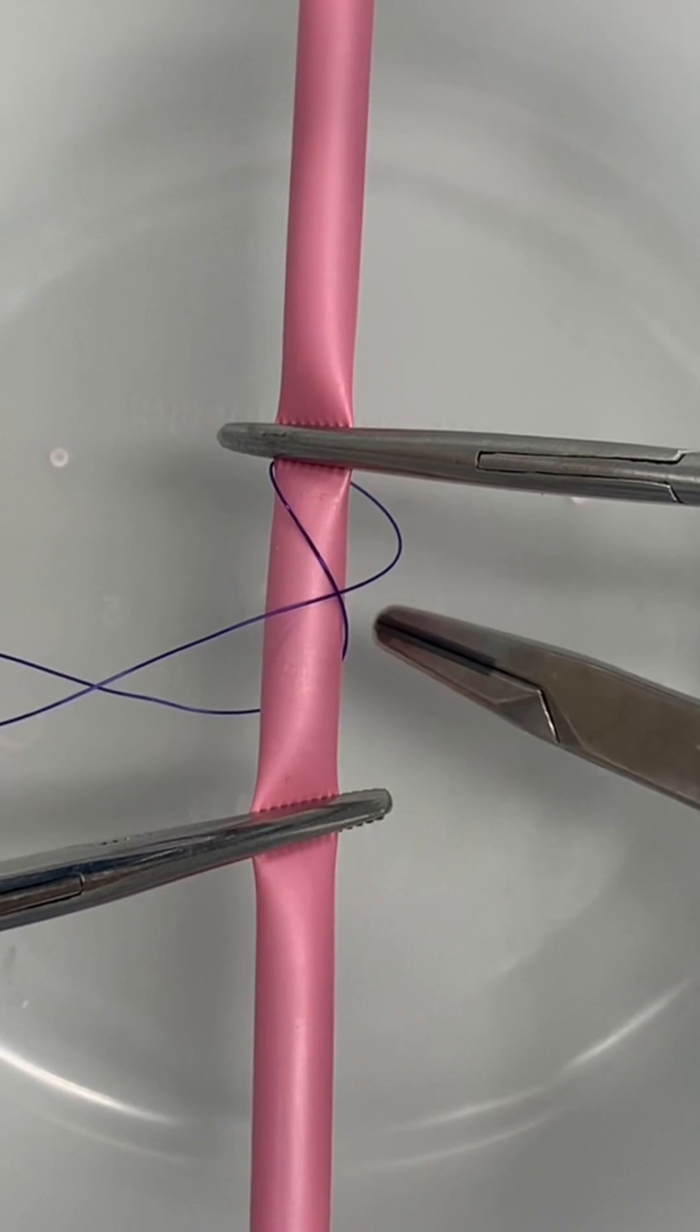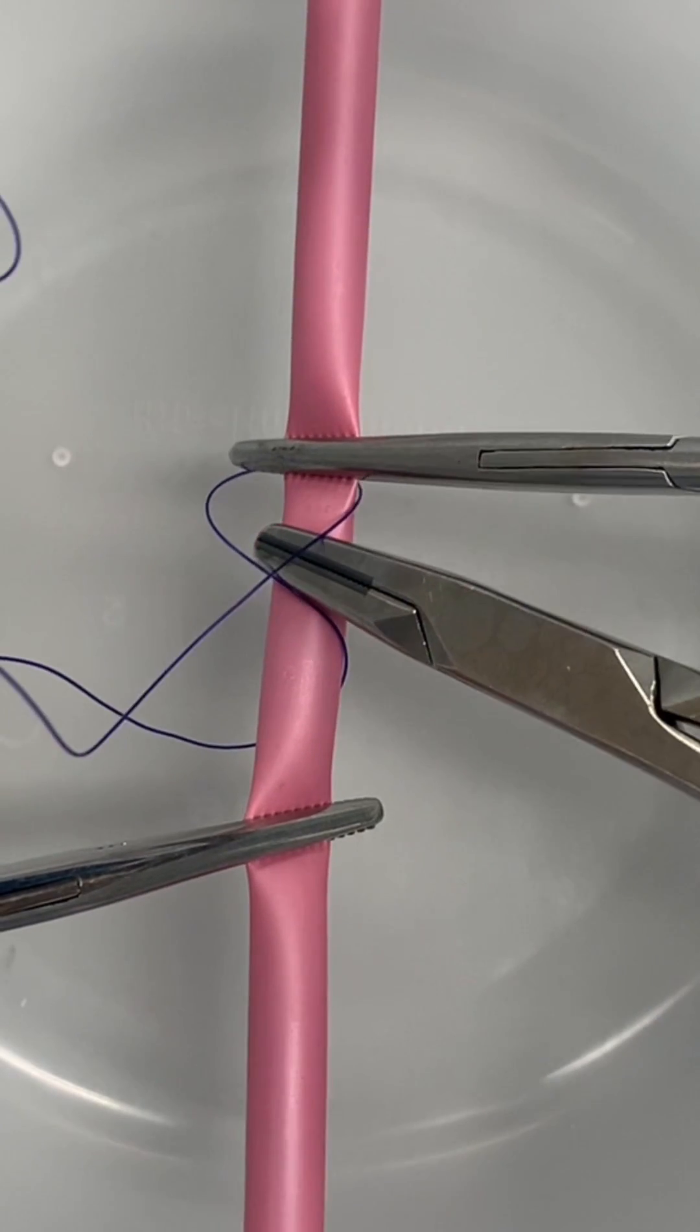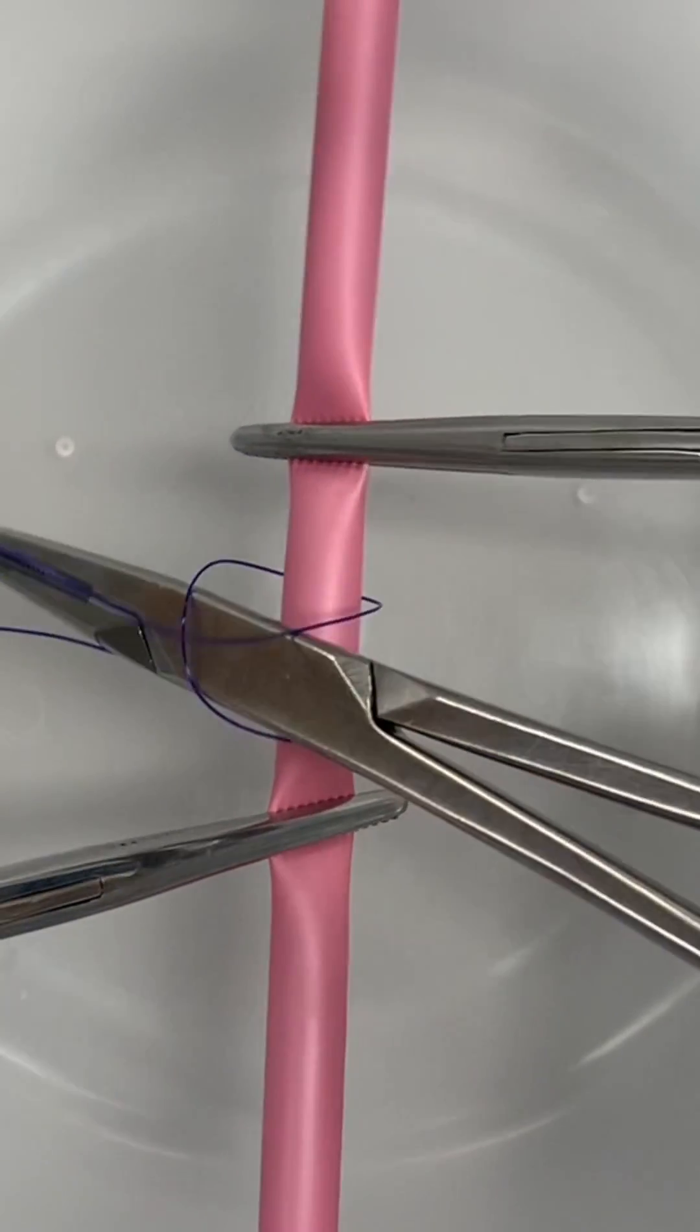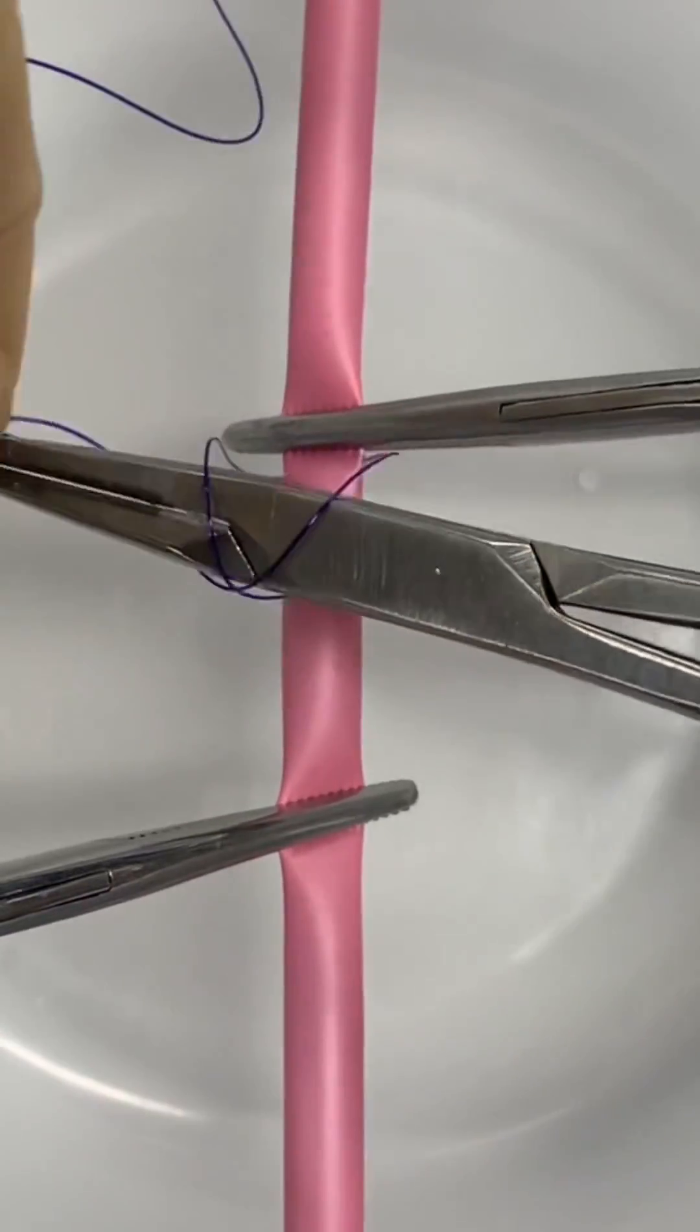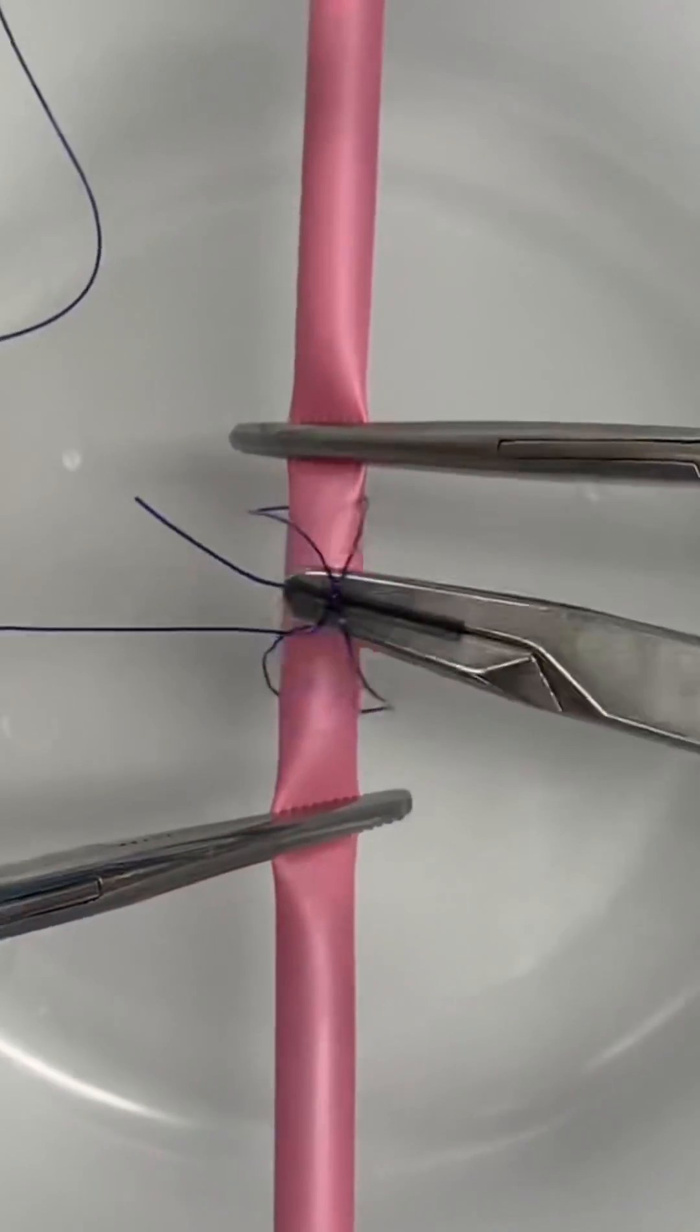Hold onto the ends of suture material in your non-dominant hand and pass the needle holders under the X towards the side of the free ends. Then let it pass over the long end to grab onto the short end and pull it through.